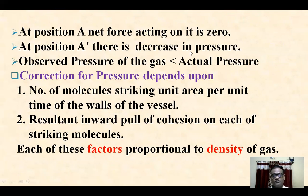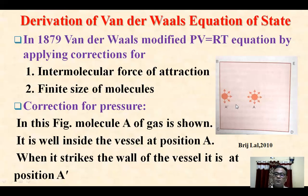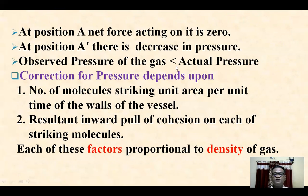At position A-dash there is a decrease in pressure, because there is a decrease in momentum at the A-dash position. Due to this inward pull, the velocity of this molecule at A-dash is slow and its momentum is less. So pressure will be less. If there were no force of attraction on this molecule, it would have collided with the wall with greater force. So the observed pressure of the gas is less than the actual pressure.